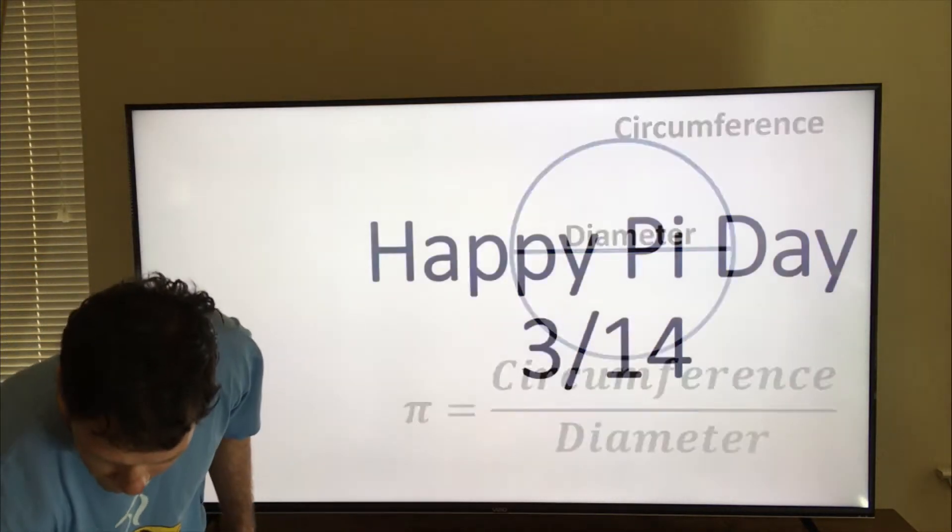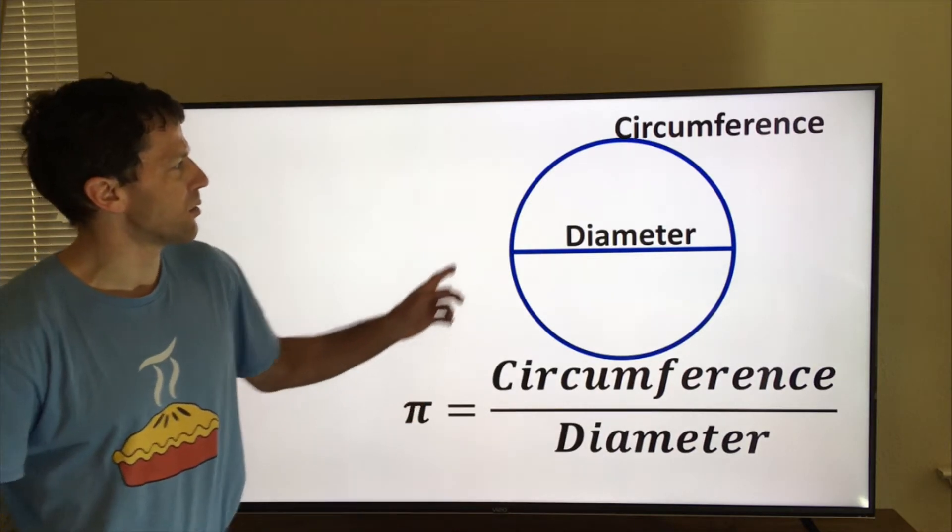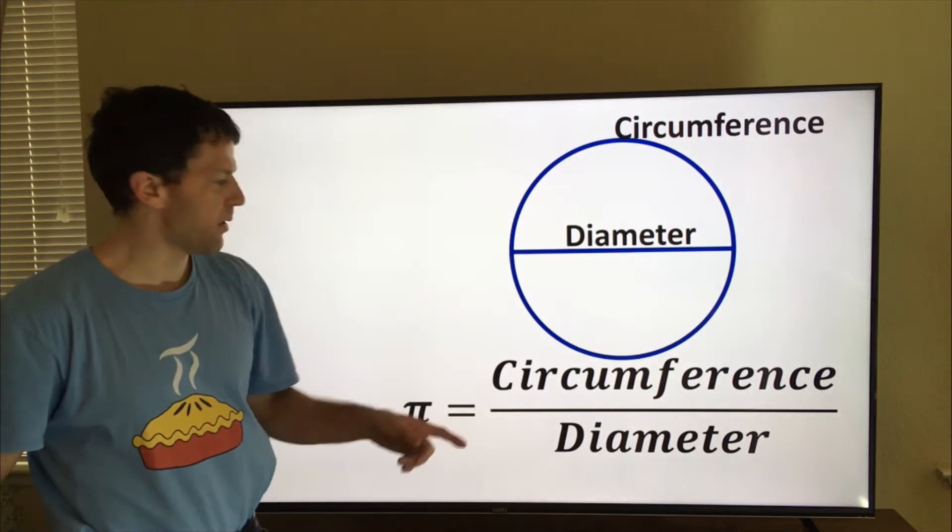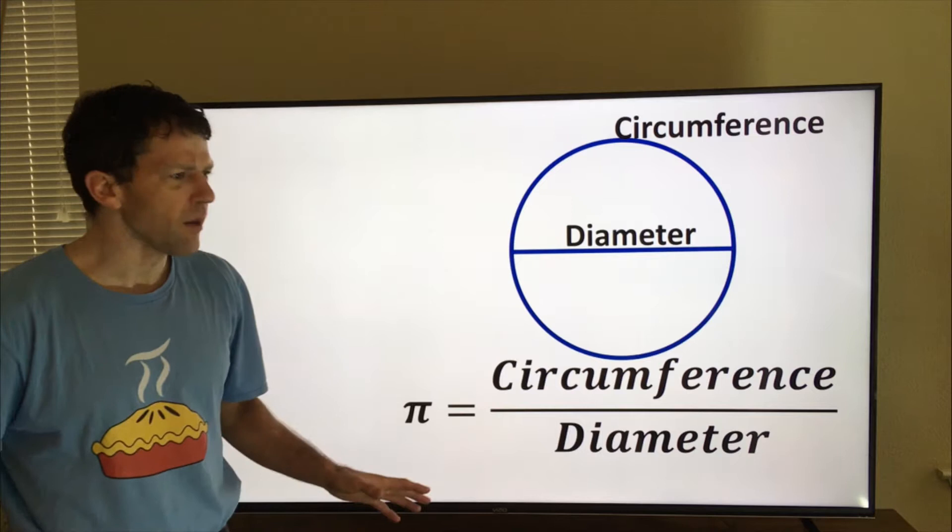What is Pi? Pi is the ratio of a circle's circumference to its diameter. So if you measure around the circumference and measure the diameter, the ratio is Pi, 3.14. That's what it is.